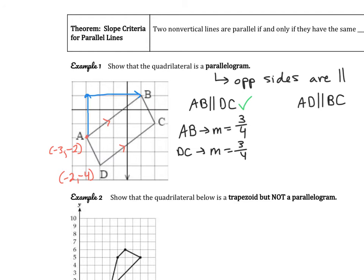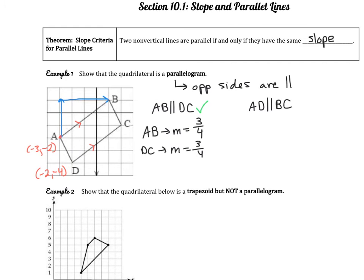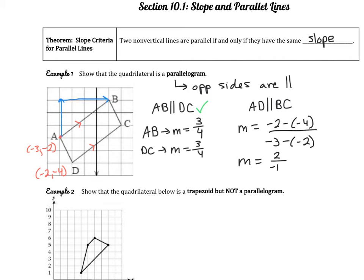Remember the slope formula is change in y over change in x. So we can do y2 minus y1: negative 2 minus negative 4 over negative 3 minus negative 2. Simplifying, this becomes negative 2 plus 4, so positive 2, over negative 3 plus 2, so negative 1. That gives us a slope of negative 2.